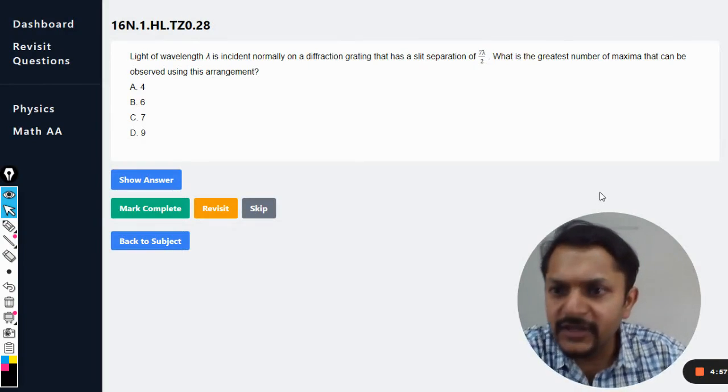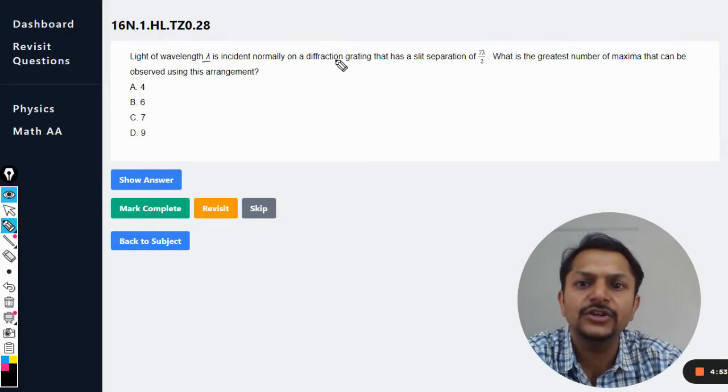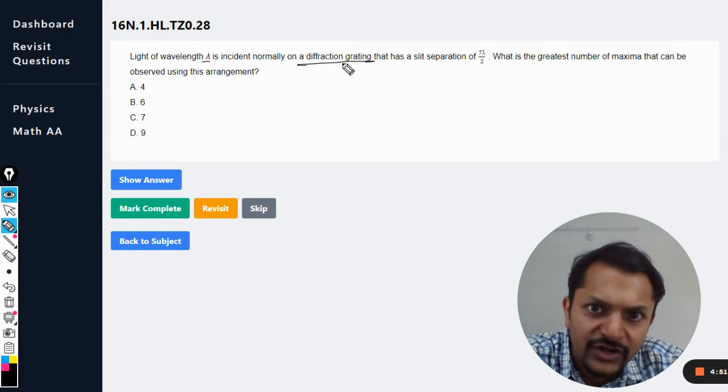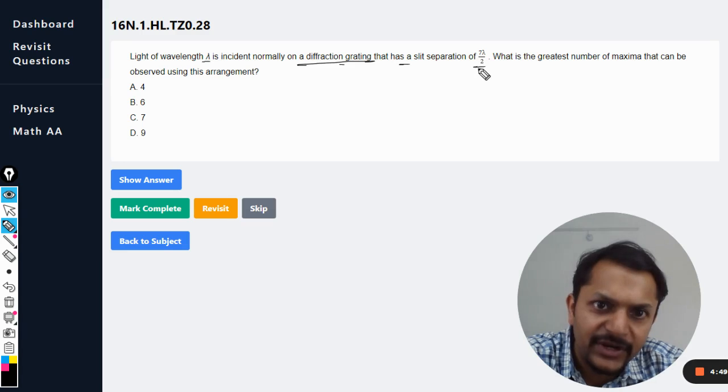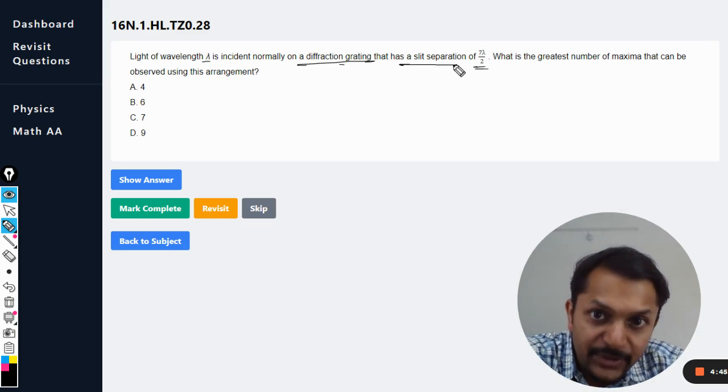Okay dear students, let us read this question. Light of wavelength lambda is incident normally on a diffraction grating that has a slit separation of 7 lambda divided by 2. So this is the slit separation that is given and we're talking about diffraction grating.